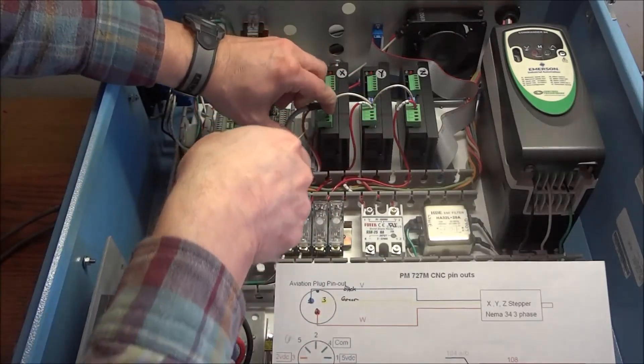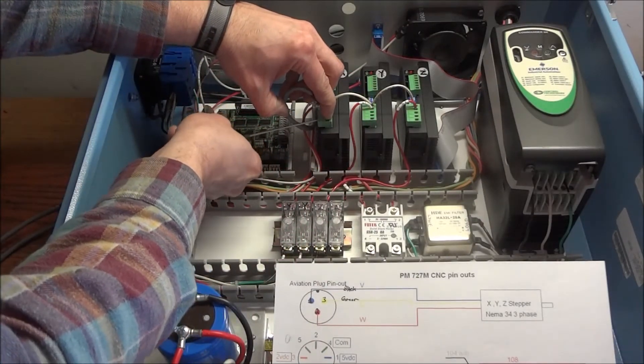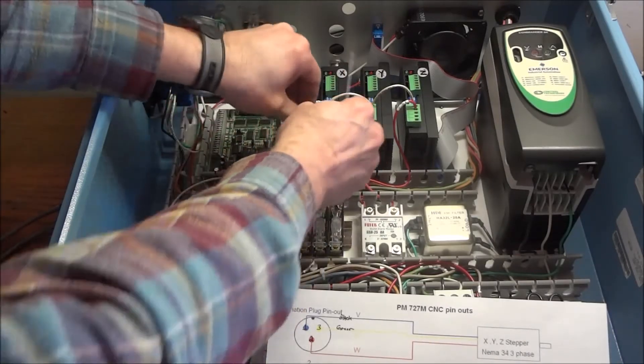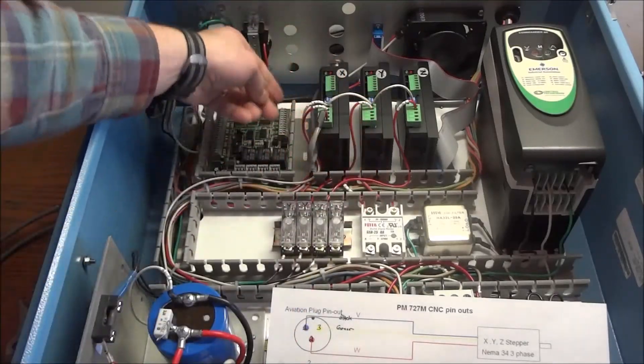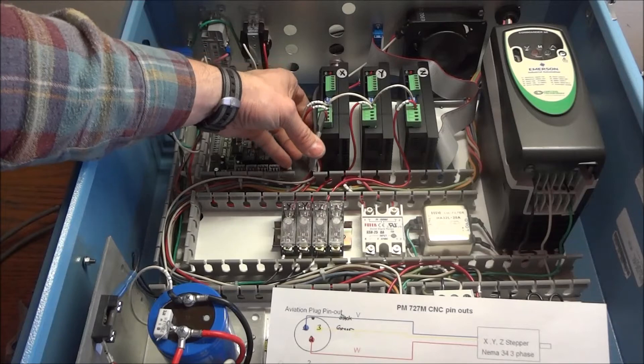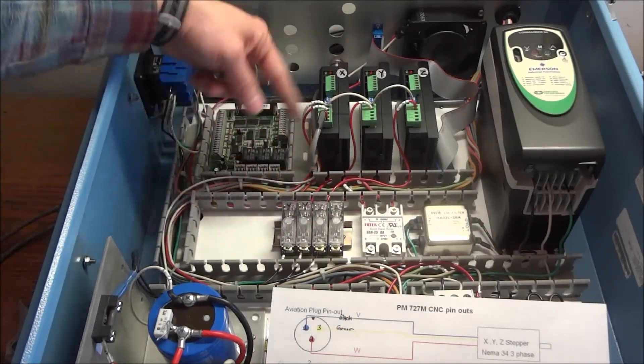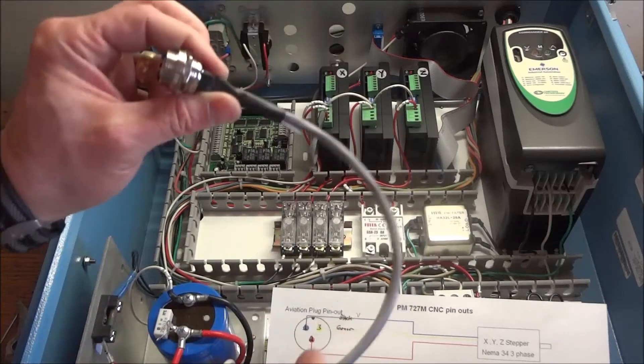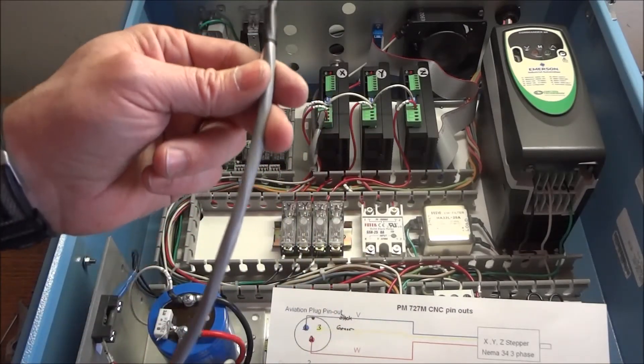Now again, I tin the ends of these because this is stranded wire. All right, and you can see that that makes for a nice neat little wiring setup there instead of having three different wires. Keeping them in the bundle makes for a nice little harness. This is just the same wire that I'm going to run out to the motors.